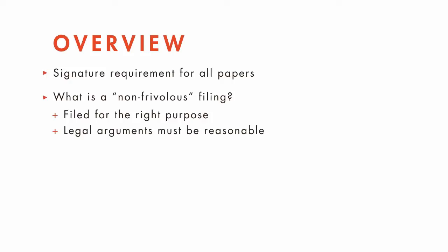(c) At the time the paper is filed, the party filing it must have an objectively reasonable basis for concluding that the factual assertions in the paper have evidentiary support, or will have evidentiary support after the parties have had a reasonable chance to gather evidence. And third, it imposes sanctions for violating requirement number two, so that there are real consequences for filing frivolous papers.